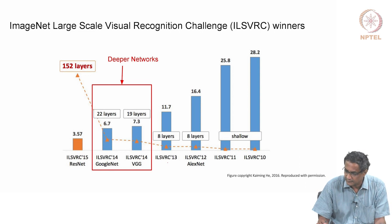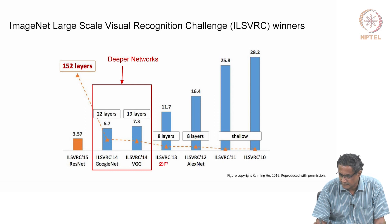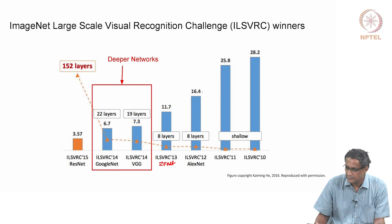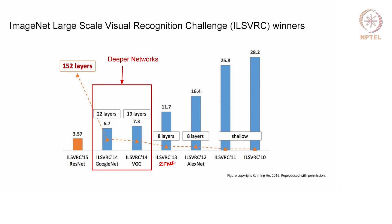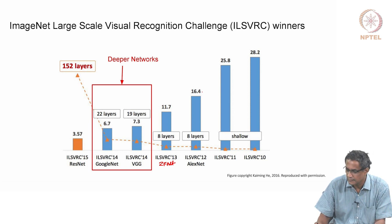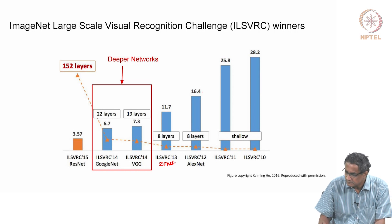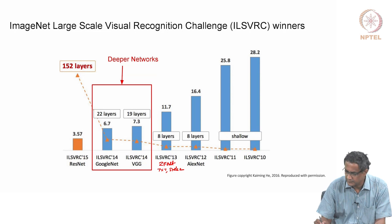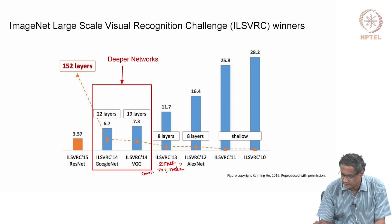ZFNet is a 2013 network named after its authors Zeiler and Fergus. What they did was bring down the error from 16.4 to 11.7. They actually followed exactly what was in AlexNet, except it was mainly a tuning of the hyperparameters. For the first layer (conv1), AlexNet had filters of size 11×11 with a stride of 4; ZFNet changed this to 7×7 with a stride of 2.